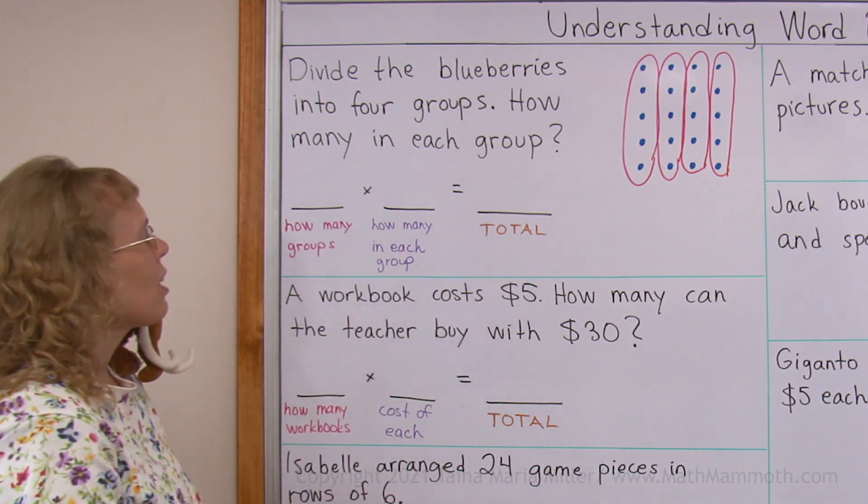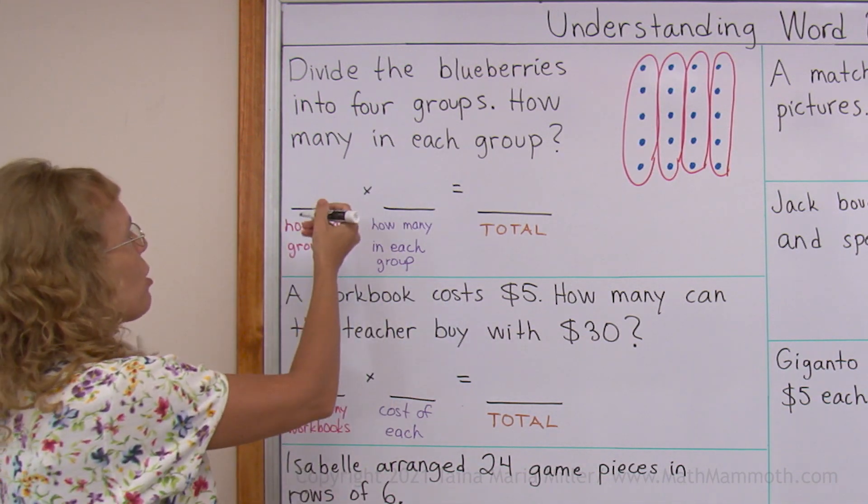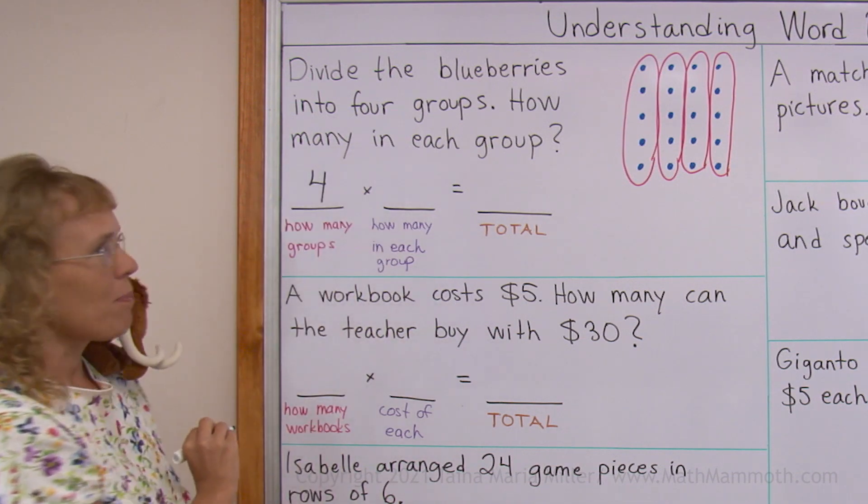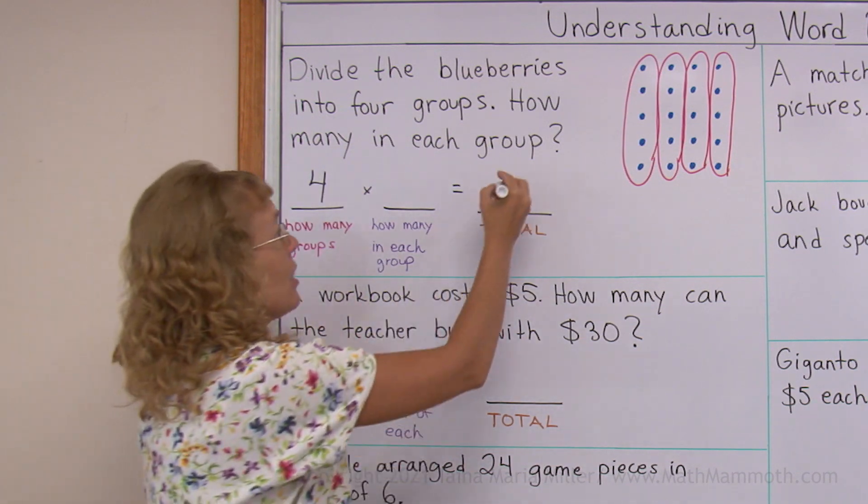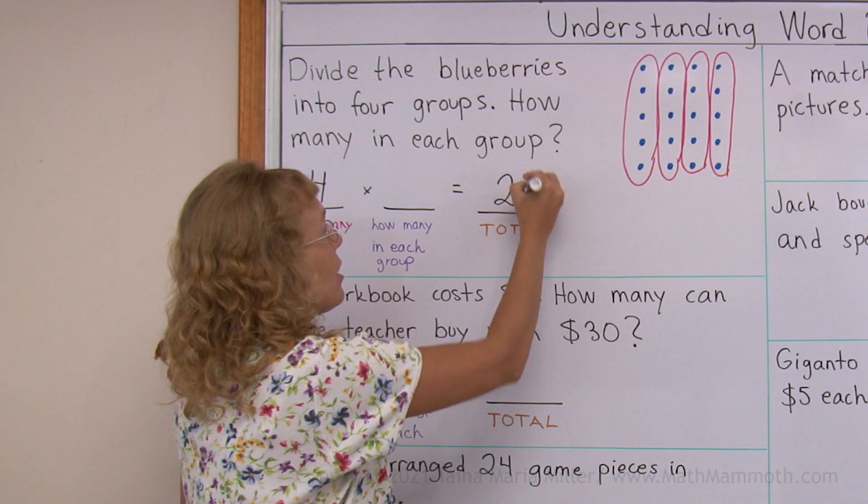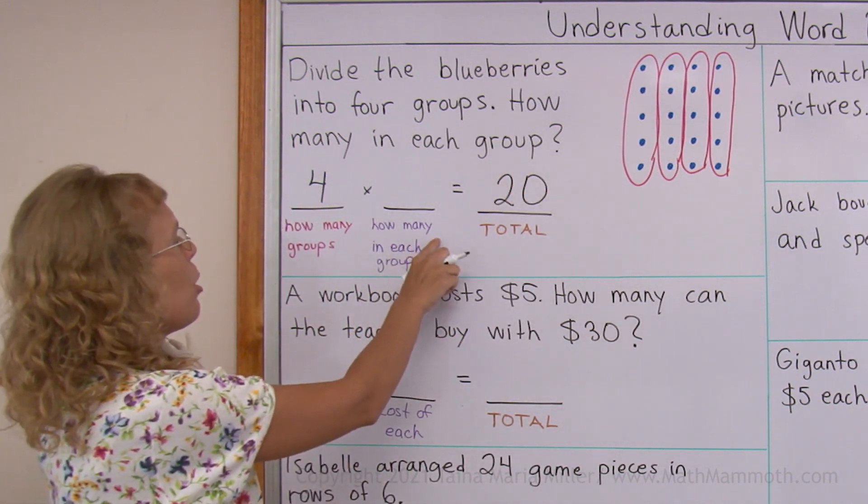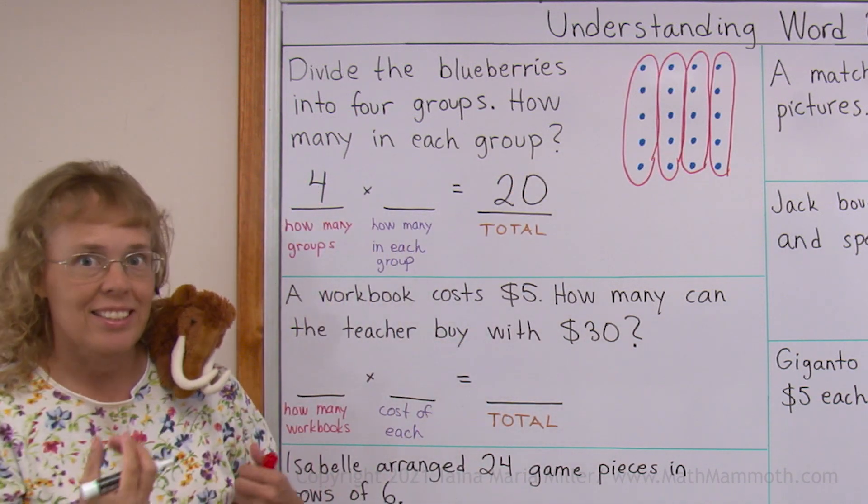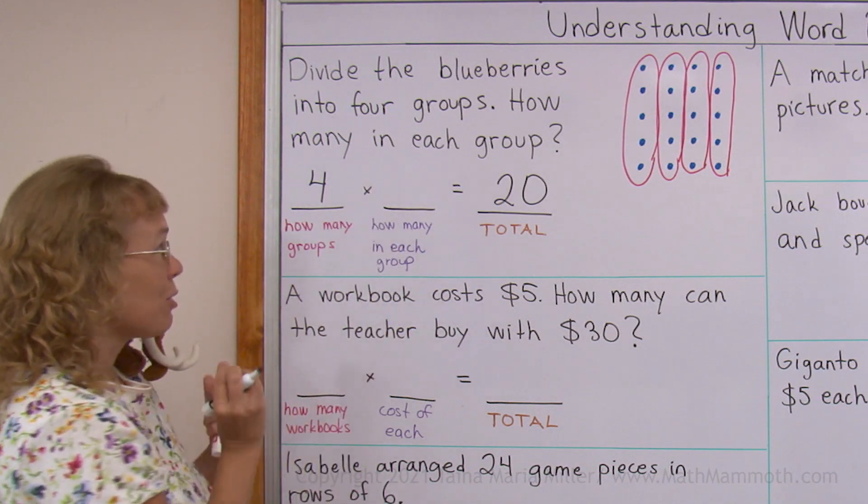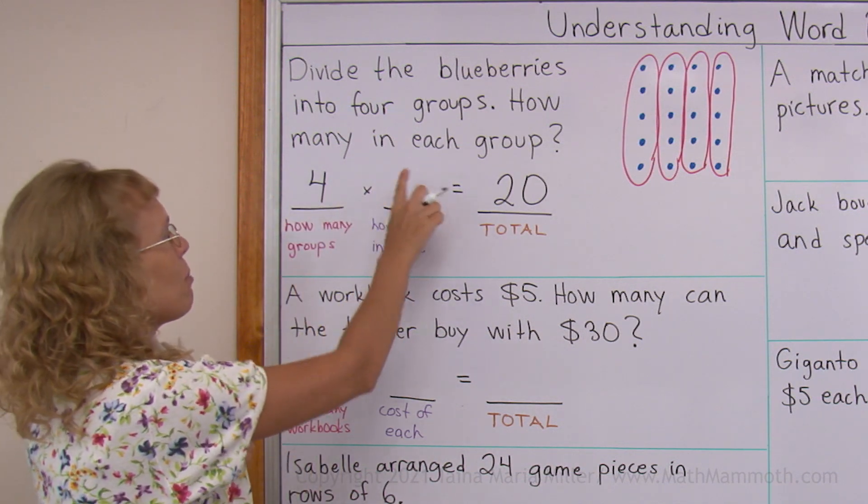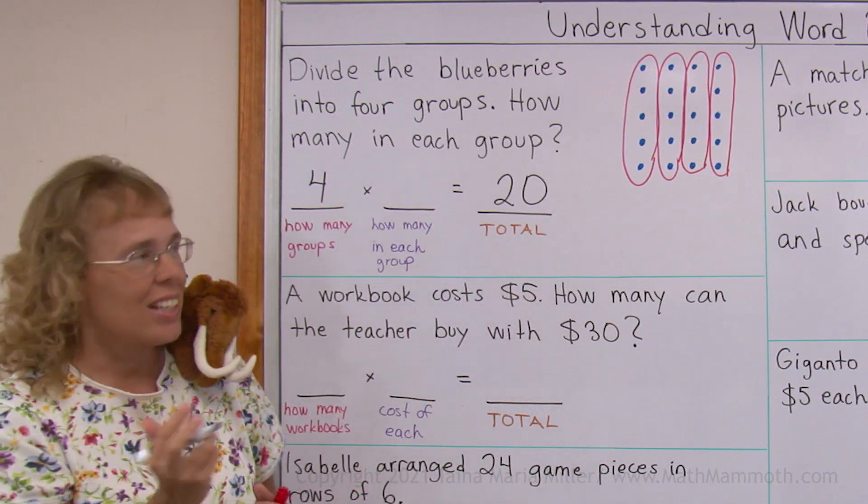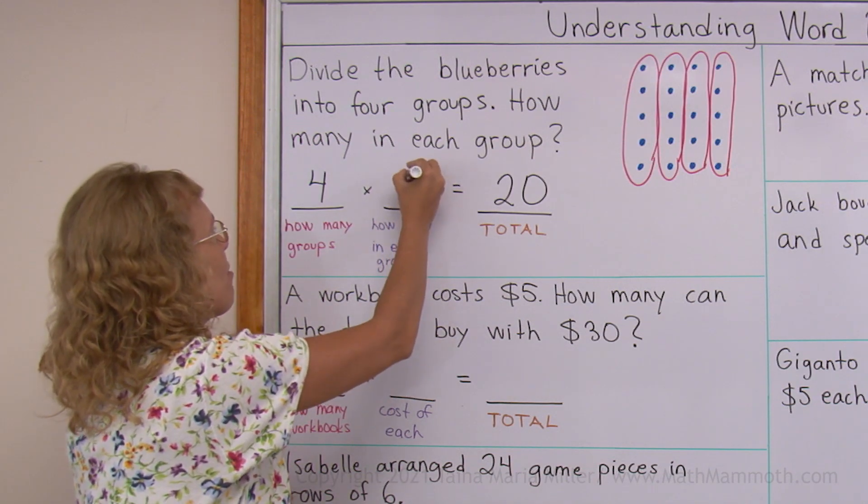And the multiplication I would write is this. How many groups? Four groups. The total is what I would know beforehand, it's 20 in this case. And how many in each group is what it is asking, so I'm going to leave that empty for now. So four times some number equals 20. And then I solve it. It's going to be five.